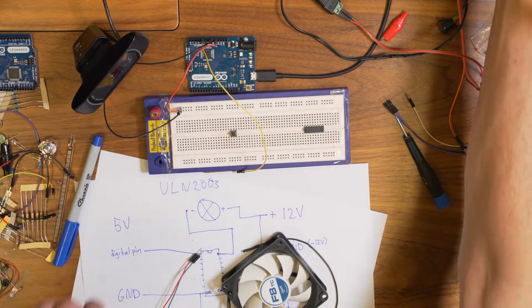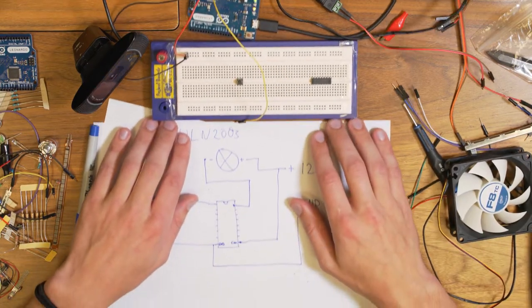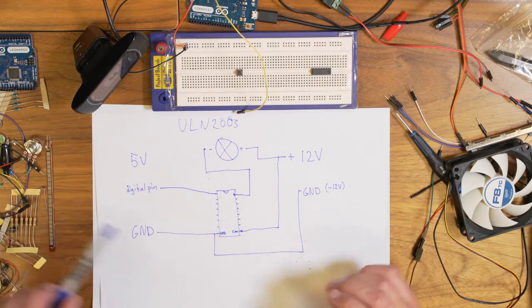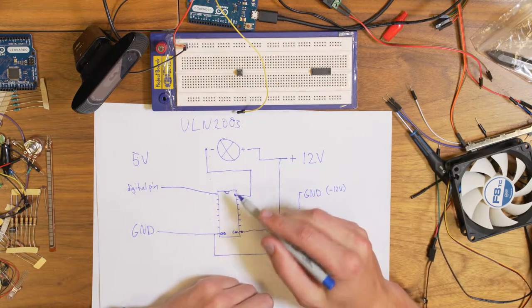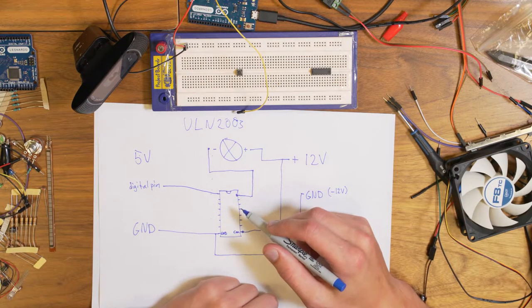It's a Darlington transistor array is what it's called. Let's see if I can find. Oh, here I have it already prepared. So here is a small sketch of the ULN.